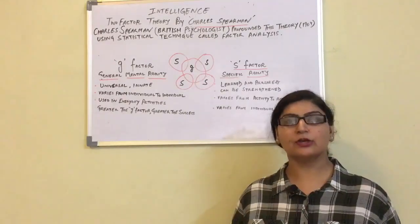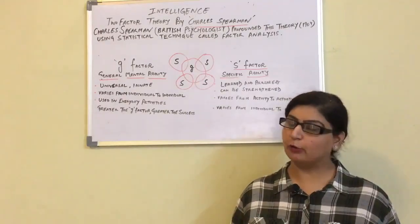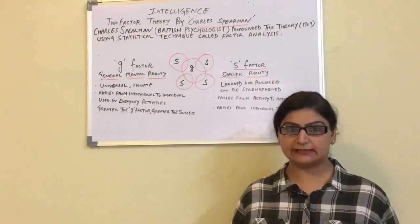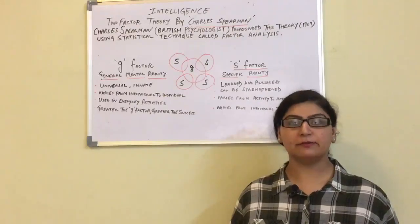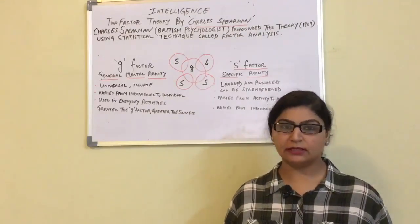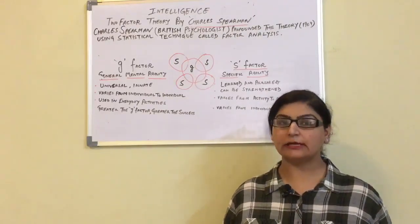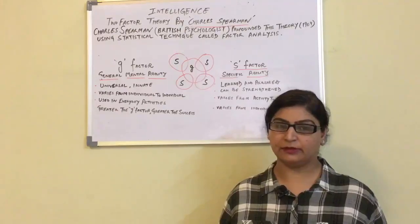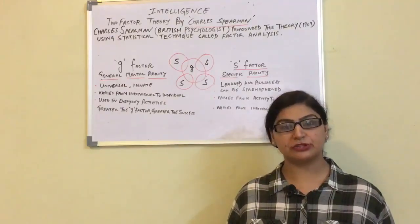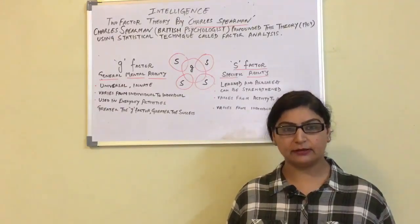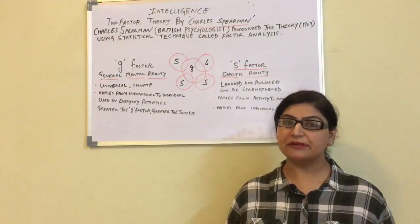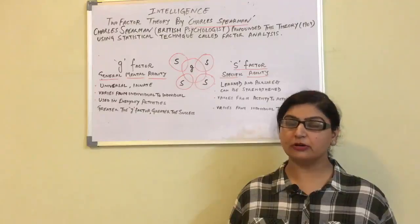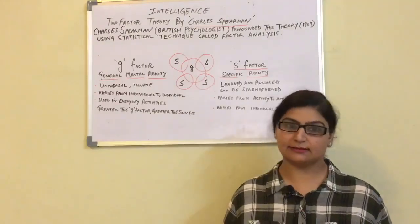Hello everyone, today we are going to start with a theory of intelligence given by Charles Spearman in the year 1904. He proposed his two-factor theory on the basis of a statistical procedure called factor analysis.